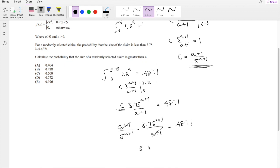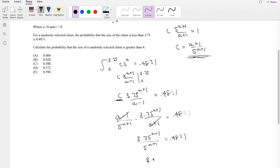So now you get 3.75^(a+1) divided by 5^(a+1) is equal to 0.4871. You can factor that, you can simplify it down even further like this, equals 0.4871.